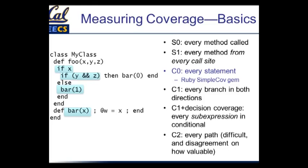C1 is the next step up. We have to take every branch in both directions — when we have an if statement, we have to make sure we do the true branch once and the not-true branch at least once. You can augment that with decision coverage, which says if we have if statements where the condition is made up of multiple terms, we have to make sure that every sub-expression has been evaluated in both directions. Any sub-expression that could independently change the outcome of the condition has to be exercised in both directions.